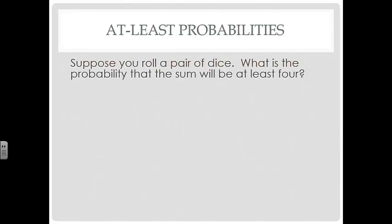Suppose you roll a pair of dice. What is the probability that the sum will be at least 4? So that means you could have a 4, 5, 6, 7, 8, 9, and so on. So we want to know the probability that the sum is greater than or equal to 4. Well, we could sit down and add up all the probabilities for 4 all the way up through 12. Or we could look at the probability of getting a 2 or a 3 and just subtract that from 1.